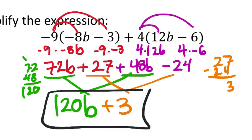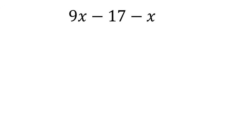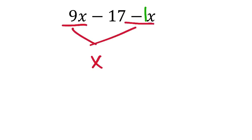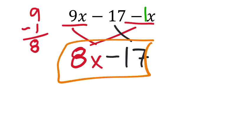More simplification: remember that a lone variable like −x has a phantom negative 1 coefficient. Combining 9x and −1x gives 8x. The constant −17 has nothing to combine with, so it stays. The simplified expression is 8x − 17 (or equivalently −17 + 8x). If the assignment wants a specific order, it will specify.